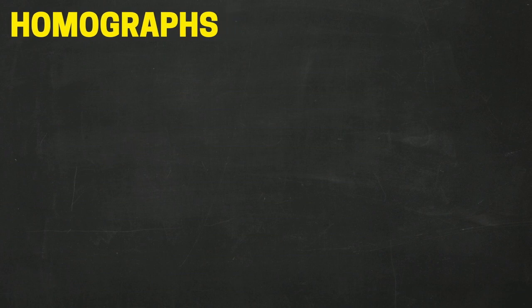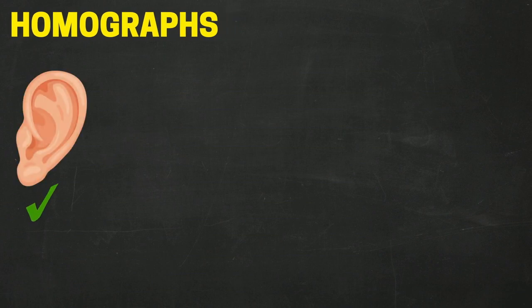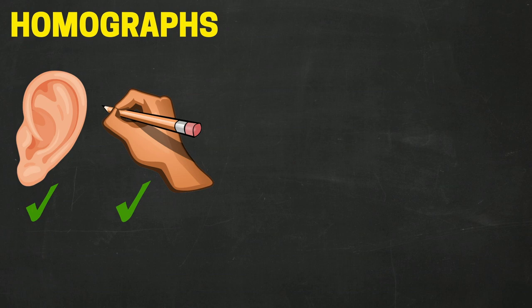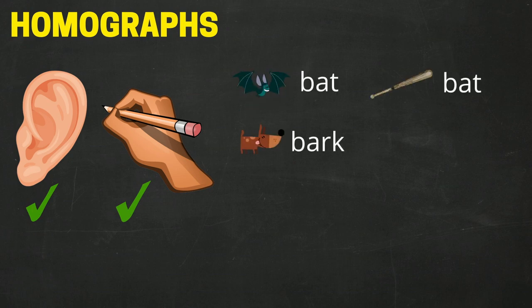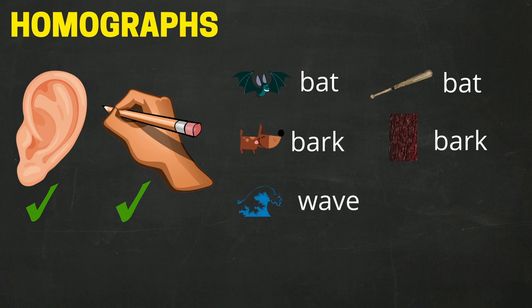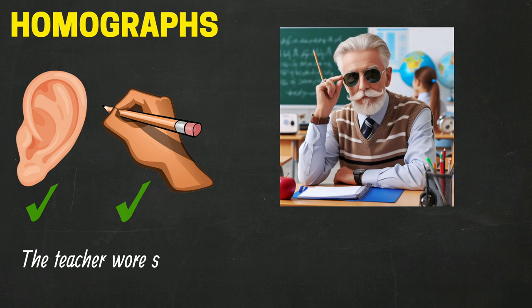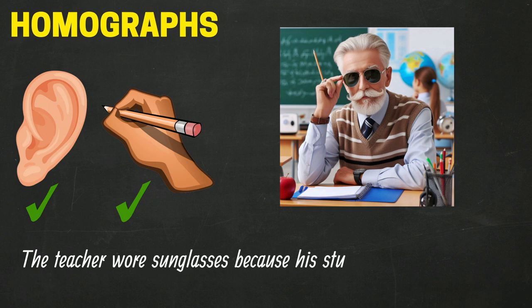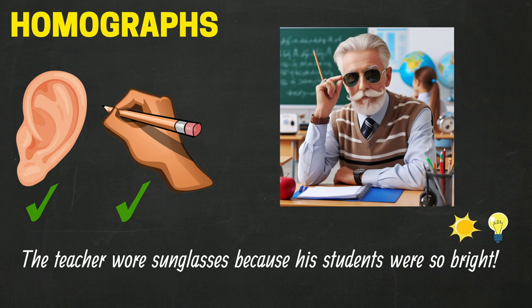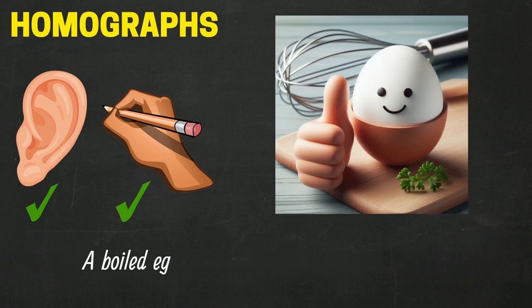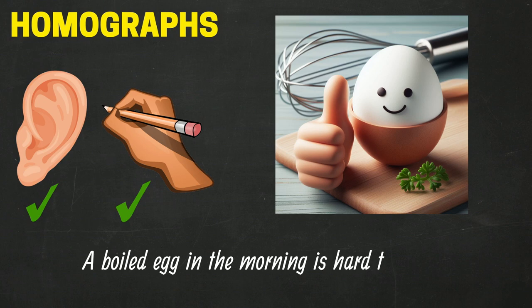Homographs are words that share the same pronunciation and the same spelling but have different meanings — like bat and bat, bark and bark, wave and wave. When you use a word that means different things, you can create an amusing pun. The teacher wore sunglasses because his students were so bright. A boiled egg in the morning is hard to beat.